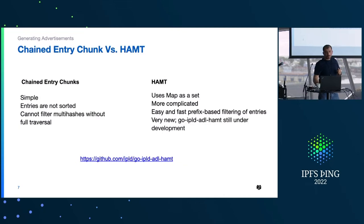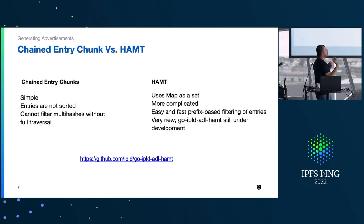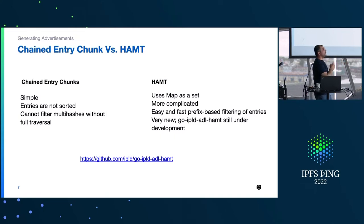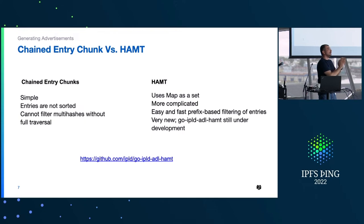When we started building index provider we started with entry chunk — it's nice and simple, just a list of multihashes chained together. But it comes with a problem: when you want to divide multihashes across multiple shards or nodes — connecting to the next steps around decentralizing the network indexer — you really can't separate multihashes by prefix or anything without traversing the entire depth of multihashes. If every node in the network wants to do that, this is a very expensive operation.